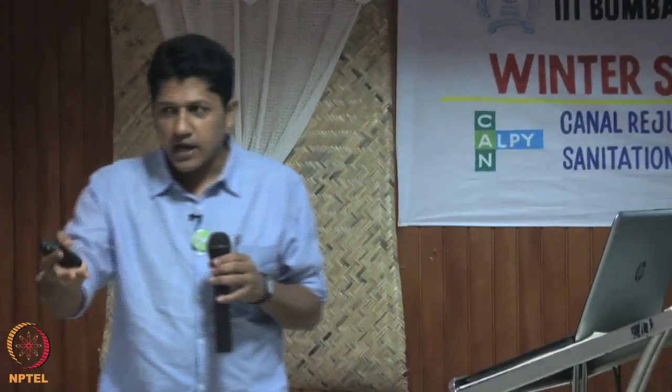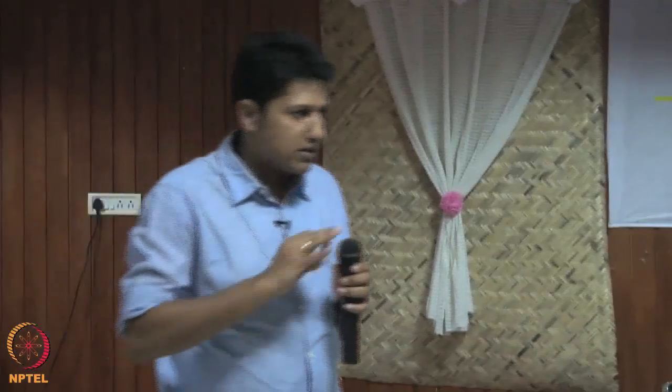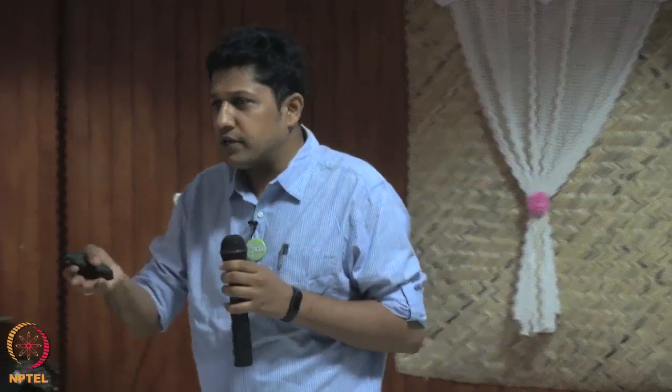We used ODK Collect and maps, and we learned along the way. Initially we provided maps with red lines indicating which side teams should cover, but in areas with dense lines it became difficult for participants. We then switched to using polygons so every team knew exactly which area they were focusing on. The sampling strategy was random sampling — each time a team was dropped at a location they chose the first house randomly.